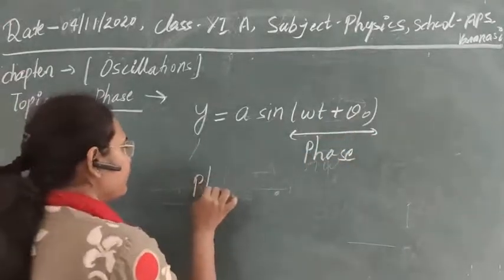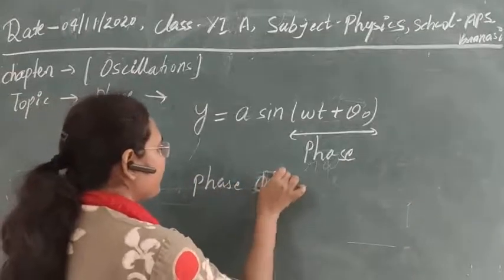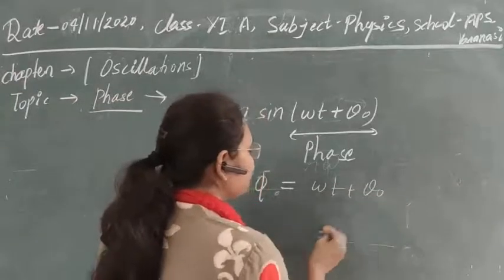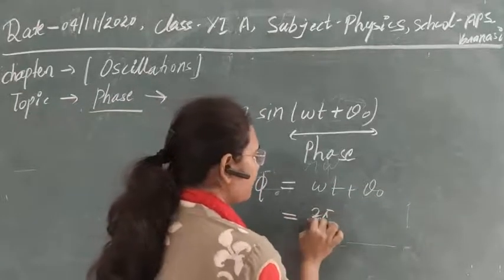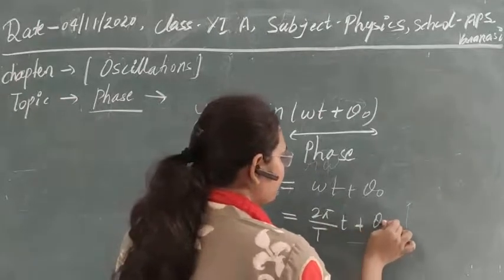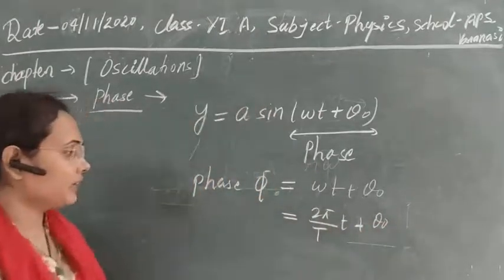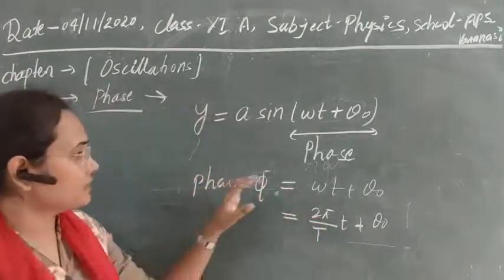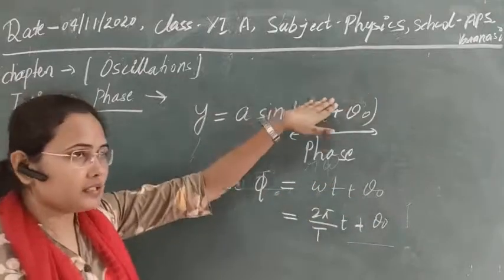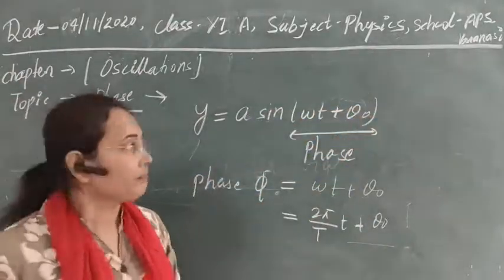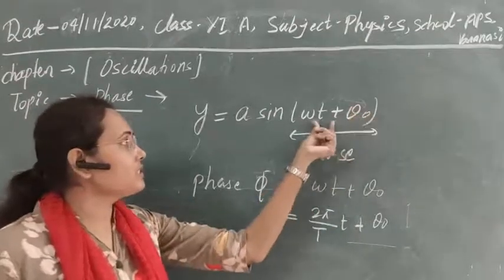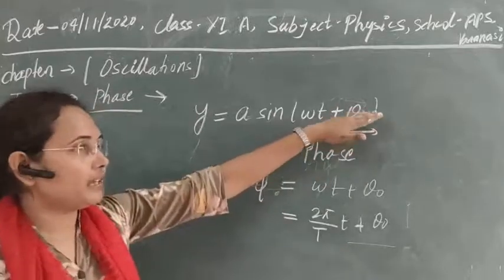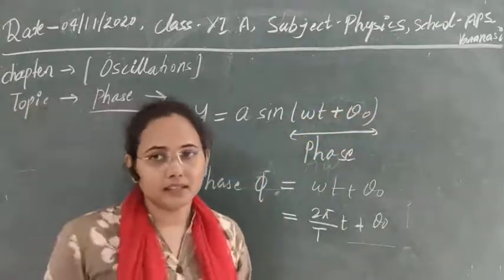The phase can be denoted by φ, and it is equal to ωt + θ₀, or we can write 2π/T · t + θ₀. If θ₀ = 0, it means the particle started from the origin and is moving accordingly. If θ₀ has some value, it tells us about the direction and other properties of the motion at the start.